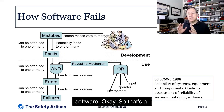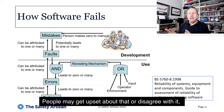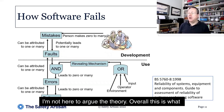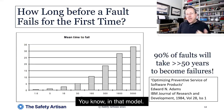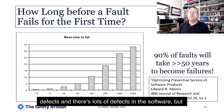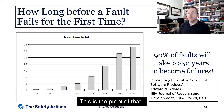That is the chain of how we get from mistakes to faults or defects in the software, to runtime errors, to failures that become apparent outside the software. That's a very useful model — broadly, that is what happens. In that model, the fact that there are mistakes may lead to defects, and there are lots of defects in the software, but they're probably lying latent. This is the proof of that.